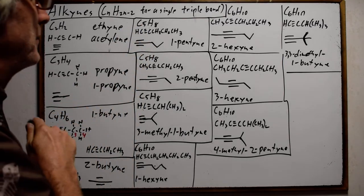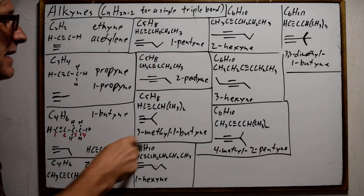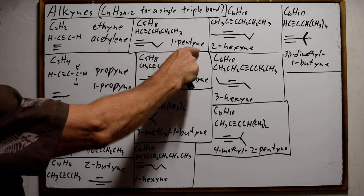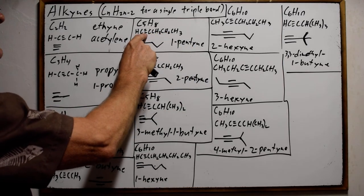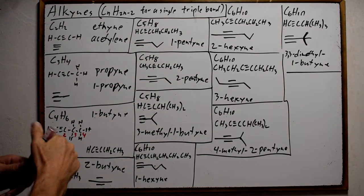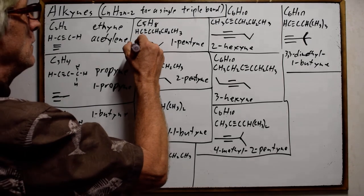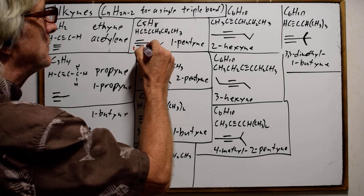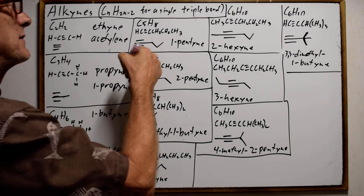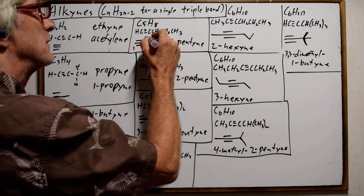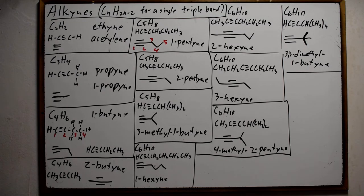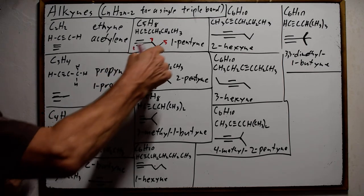Going up to five carbons, we have three isomers. Having five carbons in a row gives us a pentyne. The triple bond starting with the first carbon gives us 1-pentyne. In the skeletal formula, we have a carbon at the end of the triple bond and then a carbon at each bend thereafter — one, two, three, four, five — so that's our five carbons for 1-pentyne.